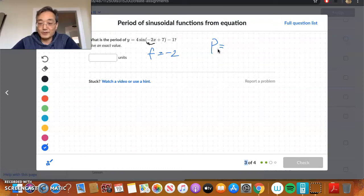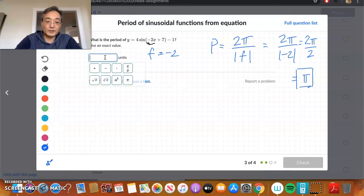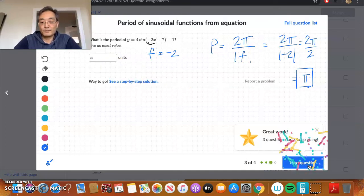Period is distance. It's the length. It's the length from consecutive maximum values or consecutive minimum values. We know that length can never be negative. So, when we do our calculation for period, it's 2 pi over the absolute value of the frequency. Take the absolute value so you don't have a negative period. Negative distance makes no sense. So, 2 pi over the absolute value of negative 2. That gives us 2 pi over 2, which can be reduced to just pi. So, in this particular problem, our period is just pi.